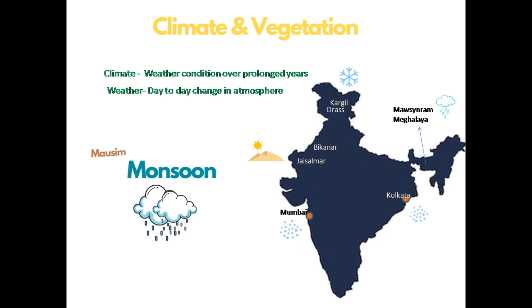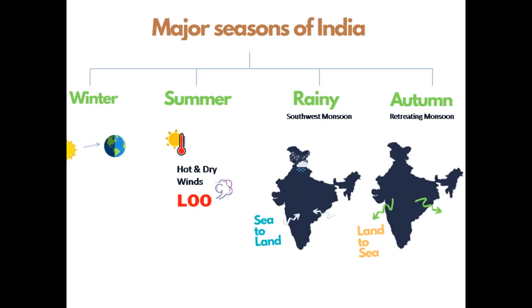Indian agriculture is dependent on rainfall — we should never waste water, as every drop counts. Higher the rain, higher the crop; lower the rain, lower the production. India has four major seasons: summer, winter, rainy and autumn, also called the southwest monsoon and retreating monsoon. In winter, sun rays are often slanting, so the temperature is quite low. During summer, sun rays fall directly, and hot dry winds called 'loo' blow throughout the day.